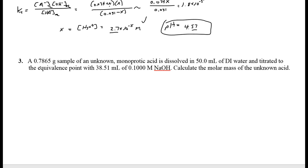The next problem involves a sample of an unknown monoprotic acid (HA) dissolved in 50 mL of water, titrated to the equivalence point. At the equivalence point, moles of acid equal moles of base. We're given the volume of titrant used and want to calculate the molar mass of the unknown acid. Titration can determine many things, and one of the most important is the molar mass of an unknown acid.